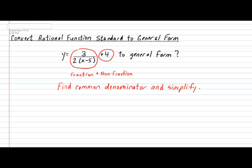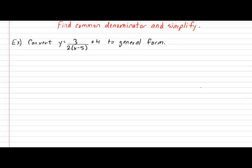So let's take a look at this very simple procedure by converting the example that we just saw into general form. Please officially put that down as our first example. Convert y equals 3 over 2 times x minus 5 plus 4 into general form. The first thing to ask yourself is what is the common denominator between 2 times x minus 5 and the invisible 1 under the 4? Well, obviously it would be 2 times x minus 5.